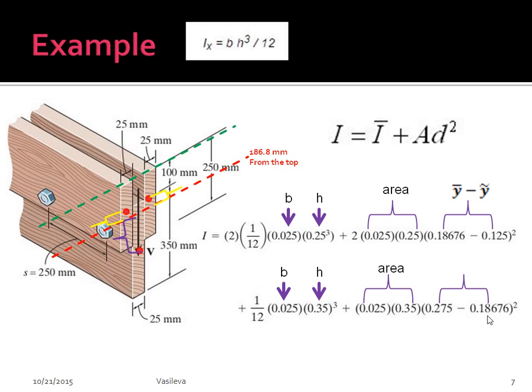And once again, d squared is y bar minus y squiggle. So we have this distance right here. Now it doesn't matter. They did 0.275 minus this. Either way, once you square it, you're going to get a positive number. So it doesn't matter if you do 0.18 minus this. You'll still get the same answer.